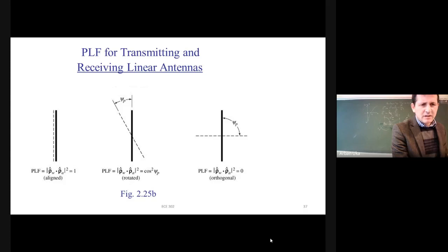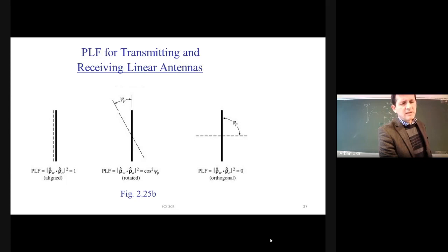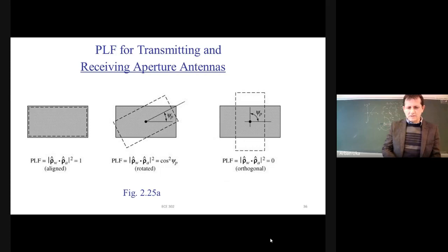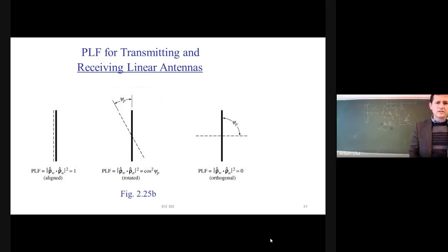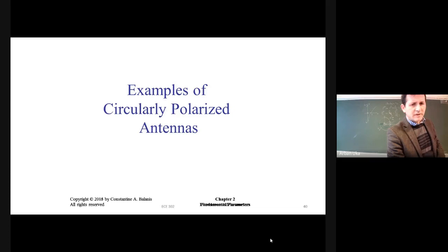For PLF with transmitting and receiving linear antennas: the first case we discussed involves aperture antennas, which receive signals from a specific solid angle — like a horn antenna. The second case is receiving linear antennas, such as a half-wavelength antenna described as a line. We will talk more about these different types of antennas in greater detail.